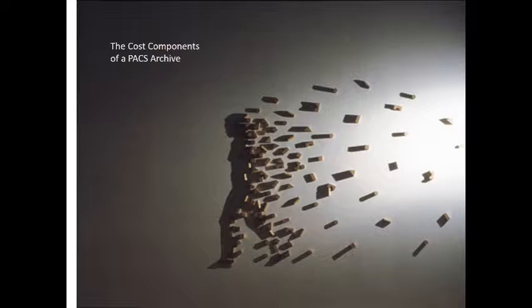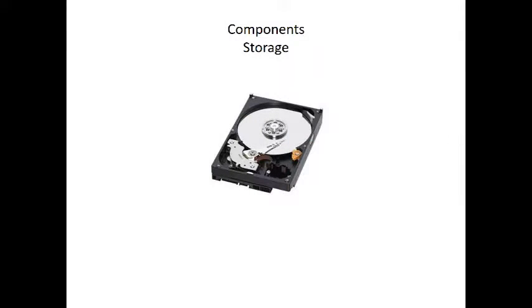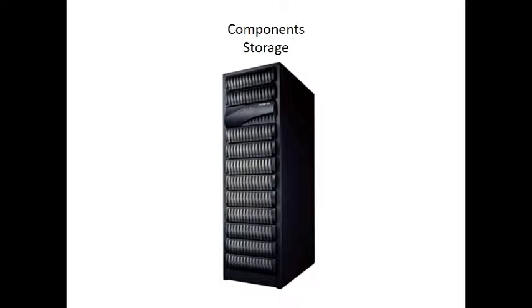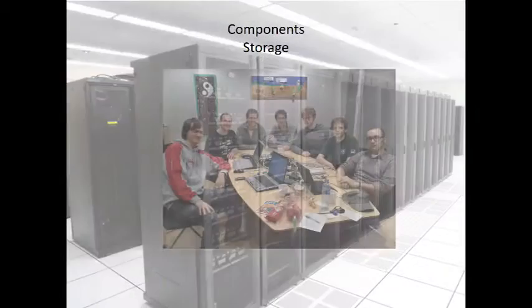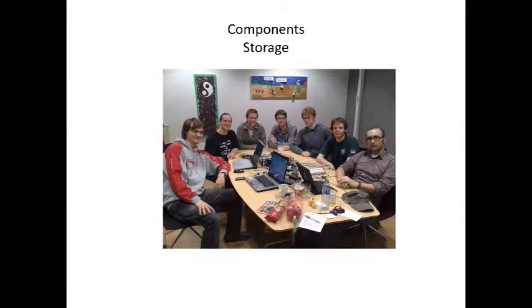Talking about what's in a PACS archive — the first thing you hear is 'disc is cheap.' Don't worry about keeping things forever because disc is cheap and it's getting cheaper every year. But we don't actually store things on a disc. We store things on a big NAS, about seven feet tall. Inside is a whole bunch of complicated, expensive stuff — cooling systems, power supplies, network controllers, fiber switches, and operating systems. It's a very complex, expensive piece of machinery, and on top of that comes a very expensive service maintenance agreement where the vendor monitors it 24/7. So disc is cheap, but you don't really buy just a disc — you buy all of this stuff.